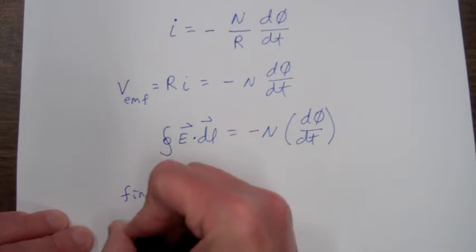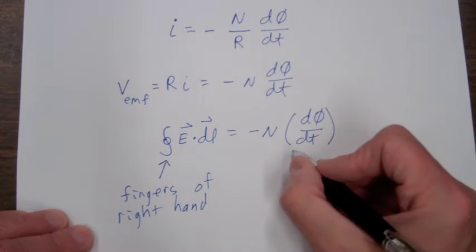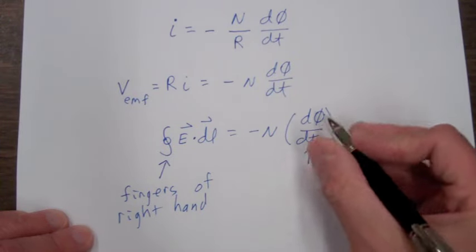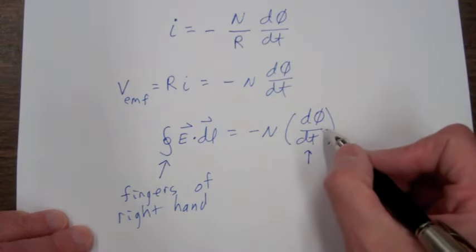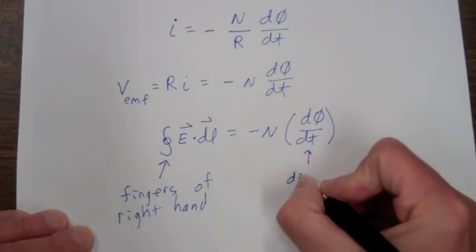then this change in flux with respect to time in parenthesis here is in the direction of your right thumb.